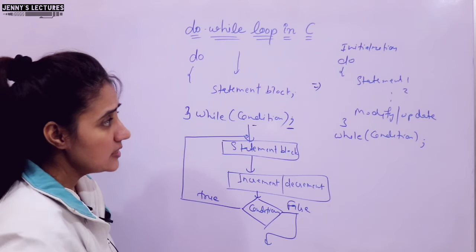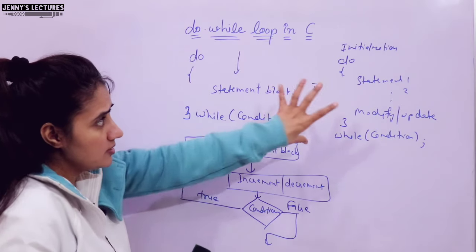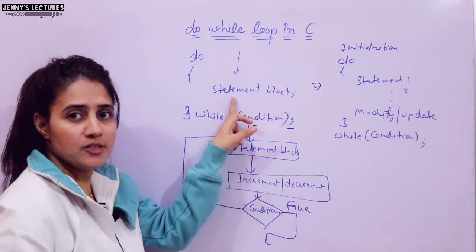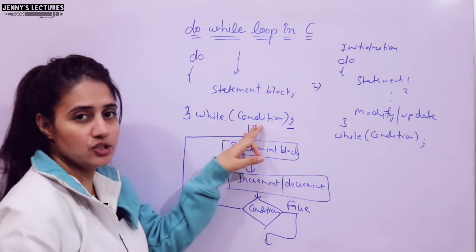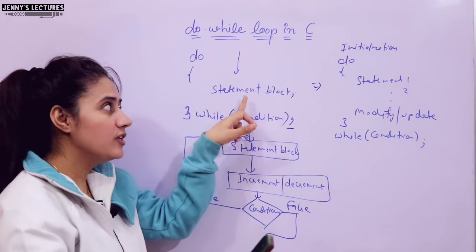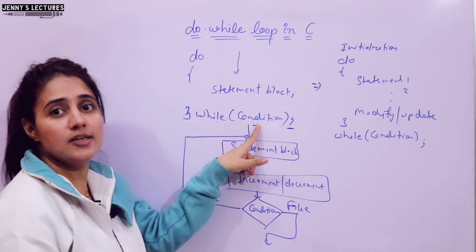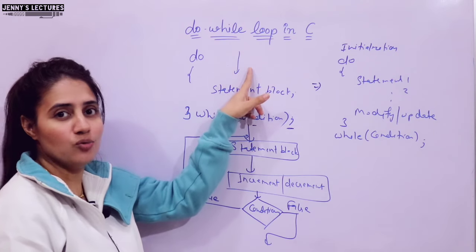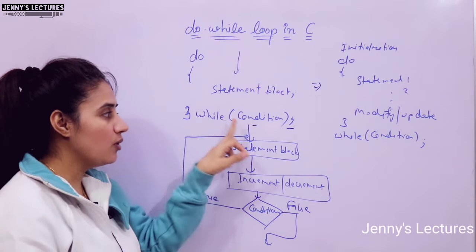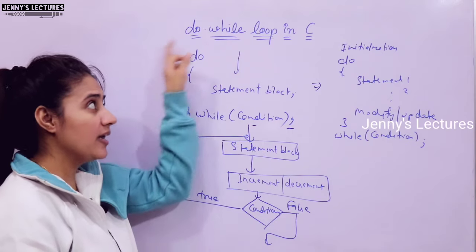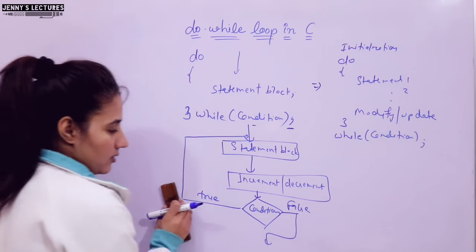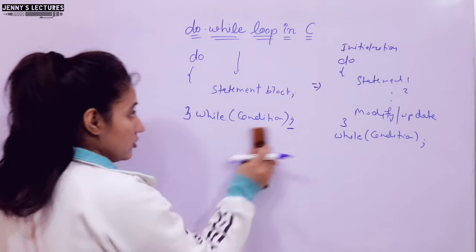From the flowchart and syntax, you can say that the body of the do-while loop will be executed at least once without checking any condition. In any case, it would be executed at least once irrespective of the condition. Even if the condition is false, this would still be executed at least once. Because it is an exit controlled loop — we are not checking the condition while entering the loop. Without any condition check, we enter the loop, so it executes at least once.